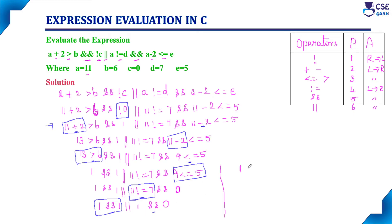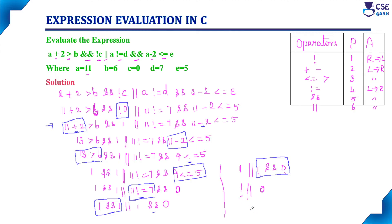Finally, only one operator remains: logical OR. Evaluate 1 OR 0 — logical OR gives true when any one condition is true, so the result is 1. We have evaluated this expression and the output is 1. This is how C compilers evaluate C expressions.